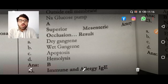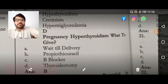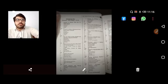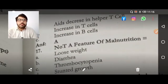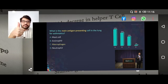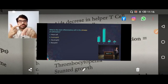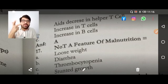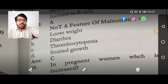Immune and allergy MCQ on asthma: the antigen-presenting cells in asthma are macrophages. The most abundant inflammatory cells in asthma are eosinophils. The histamine-releasing cells in asthma are mast cells. The histamine-releasing cells in blood are basophils.